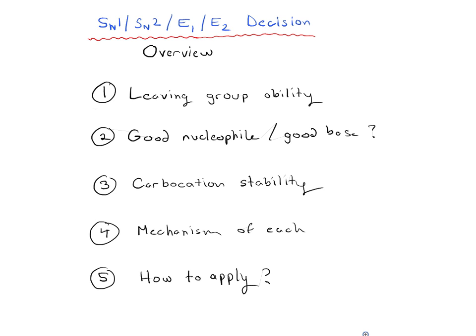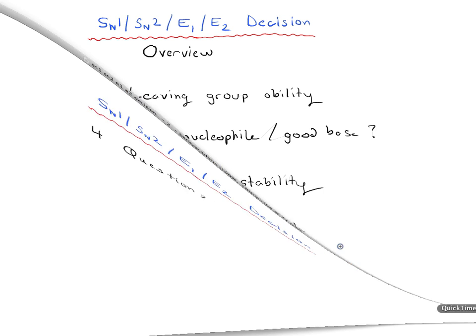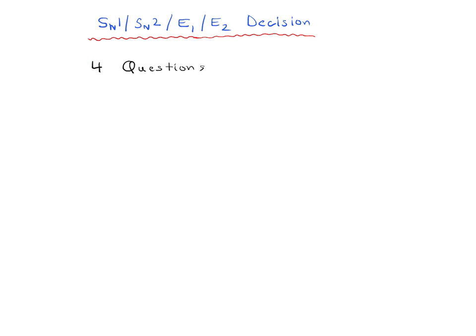So assuming that you're comfortable with each of these five topics, we can start getting into the main four questions you really want to ask yourself when you're thinking about the SN1, SN2, E1, E2. And like I said, if these topics aren't familiar to you or you feel like you need to go through more review, there's previous videos in this series that we can go through each of those topics in detail. So you'll feel more confident as you approach this question, how to understand, how to approach it.